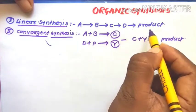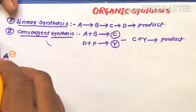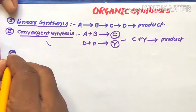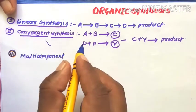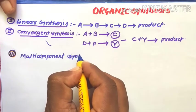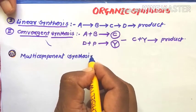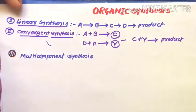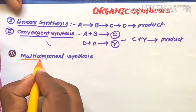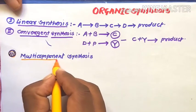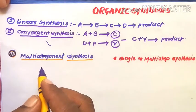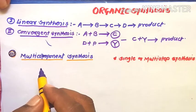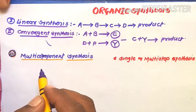In linear synthesis there is a stepwise conversion: A to B, B to C, C to D, to product molecules. In today's lecture, we will discuss an important type of organic synthesis: multi-component synthesis.